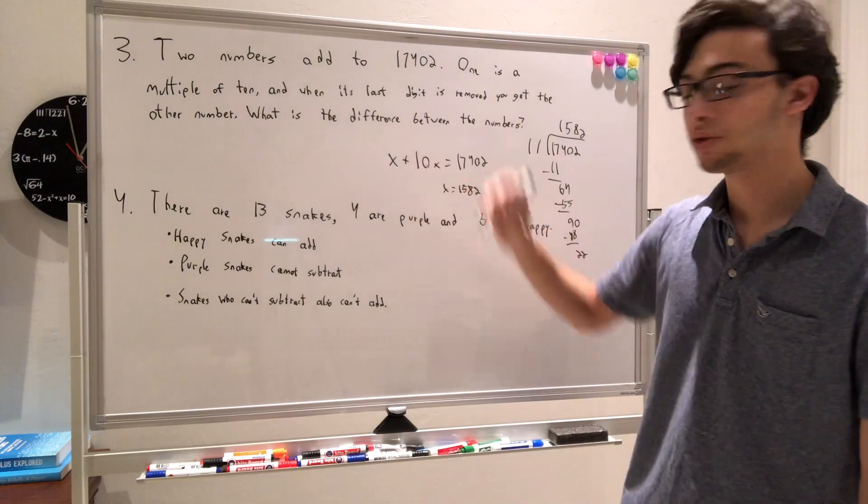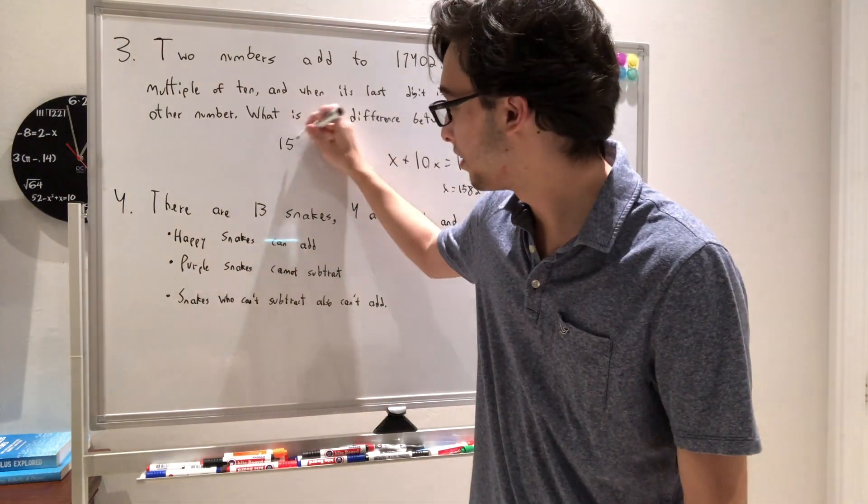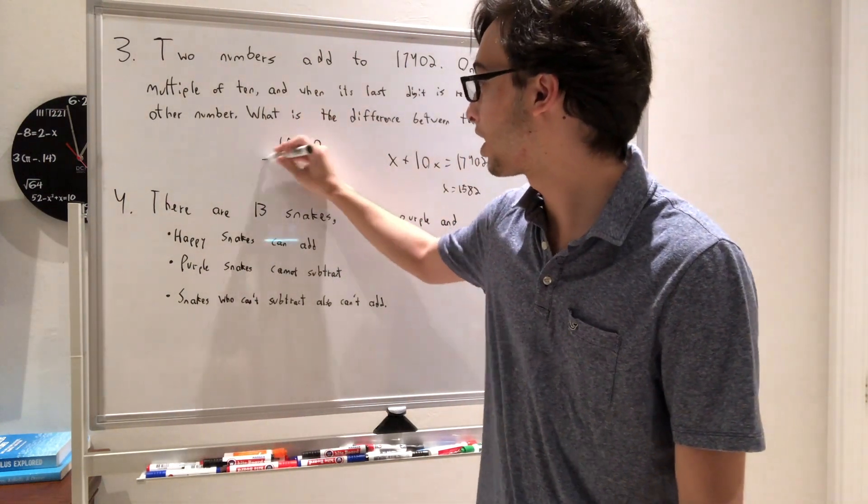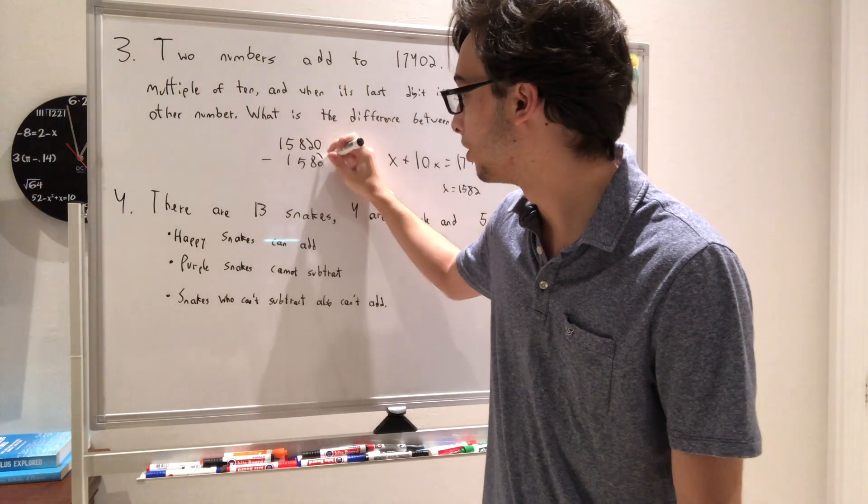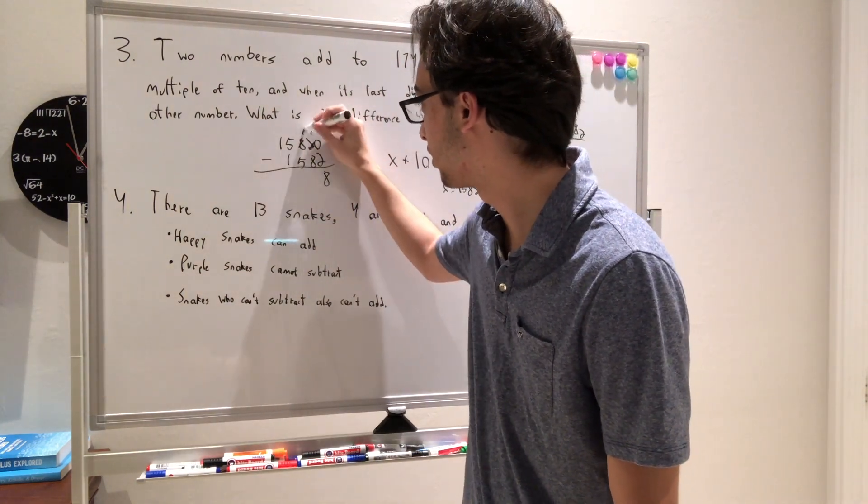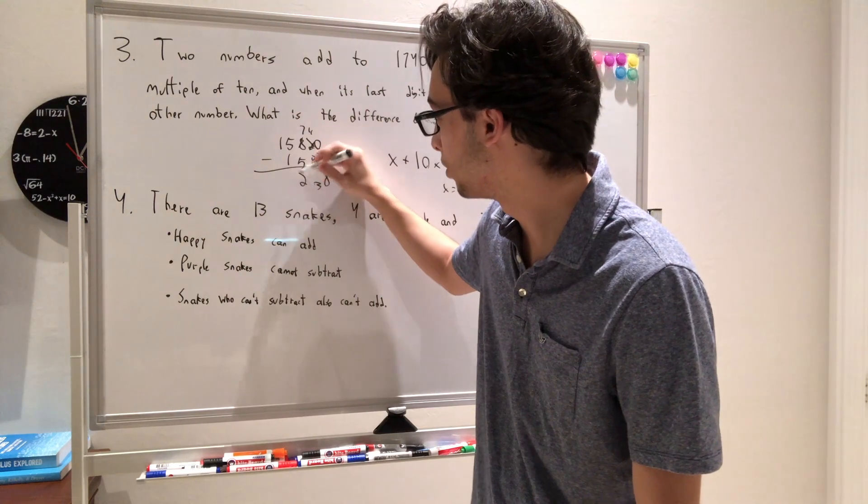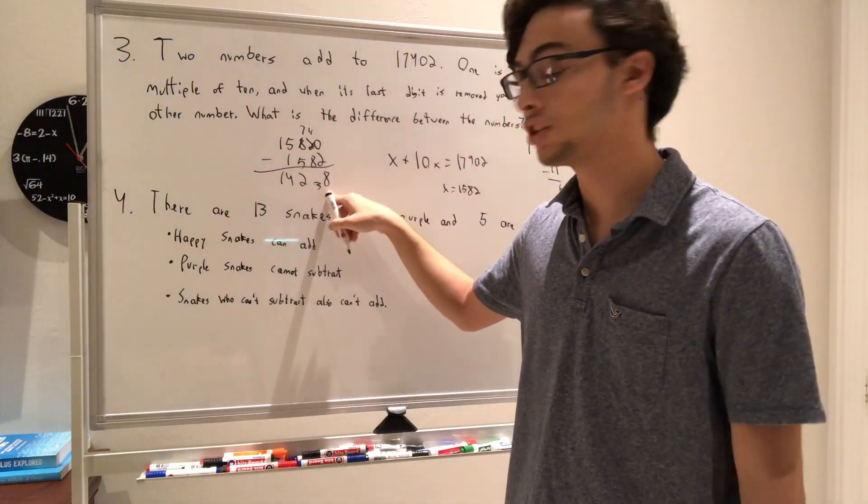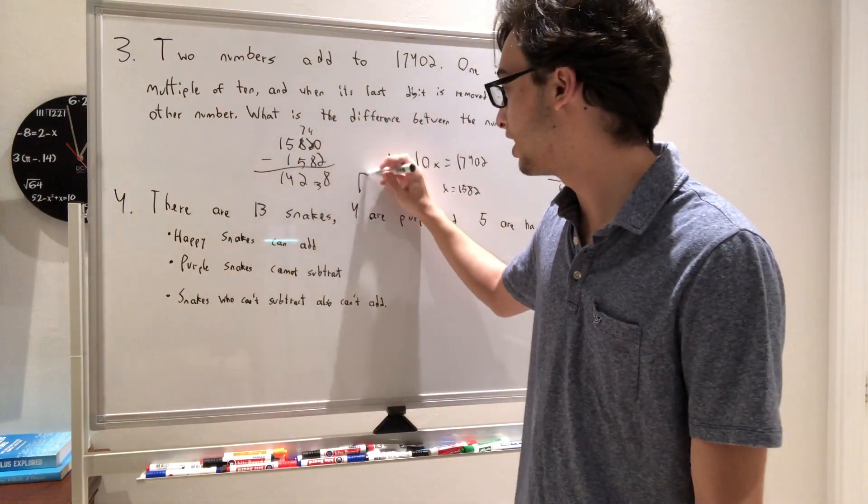So now all we need to do is find the difference between the two. So we take 15,820, and we subtract 15,82. So doing this subtraction, it's going to give us 3 there, 2, 4, 1. So we have 14,238, which is answer choice D, and we're done with the problem.